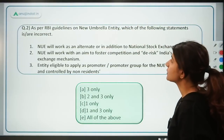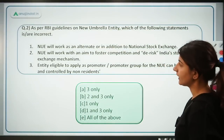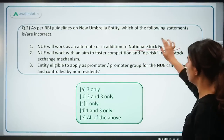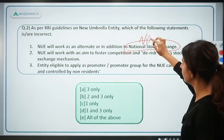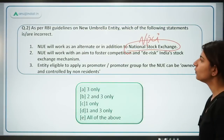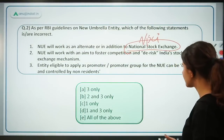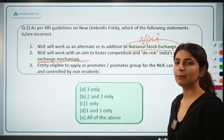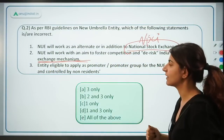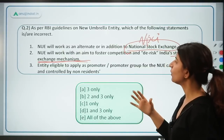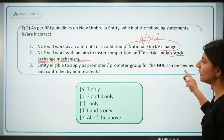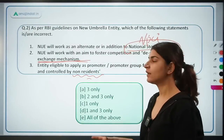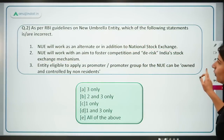As per RBI guidelines on new umbrella entities, which of the following statements is incorrect? NUE will work as an alternate and in addition to NSC — incorrect; it will work as an alternate to NPCI. NUE will work with an aim to foster competition and de-risk India's stock exchange mechanism — incorrect; it is for the digital retail payment system, not the stock exchange. An entity eligible to apply as promoter or promoter group for NUE can be owned and controlled by non-residents — incorrect; they must be owned and controlled by residents only.